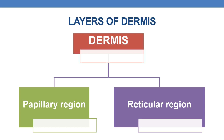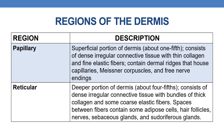The dermis has two regions: the papillary region and the reticular region. The papillary region is the superficial portion of the dermis, about one-fifth, consisting of dense irregular connective tissue with thin collagen and fine elastic fibers. It contains dermal ridges housing capillaries, Meissner's corpuscles, and free nerve endings. The reticular region is the deeper portion, about four-fifths, consisting of dense irregular connective tissue with bundles of thick collagen and coarse elastic fibers. Spaces between these fibers contain adipose tissue, hair follicles, nerves, sebaceous glands, and sudoriferous glands.